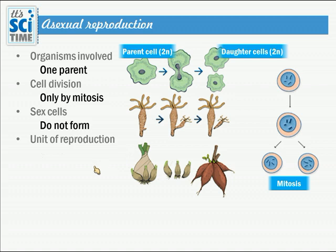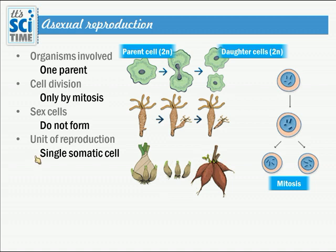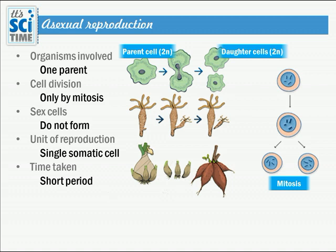The unit of reproduction in asexual reproduction is a single somatic cell — also called a vegetative cell. From one vegetative cell, a new young one can be produced. You can see from examples in plants: from one cell or tissue a new plant is produced, and a small bud can become a new plant. Time taken is short, as it is a simple process of making a copy from the parent.